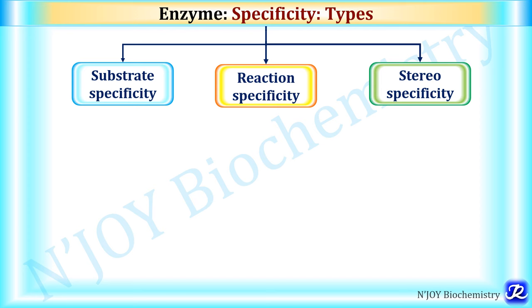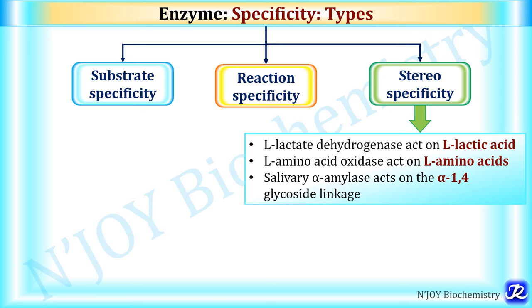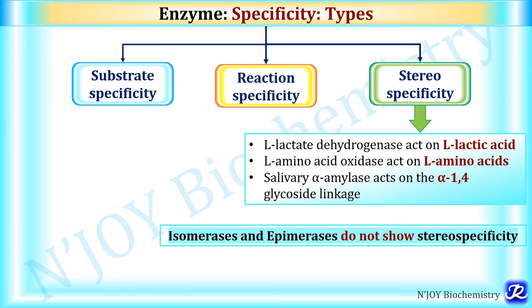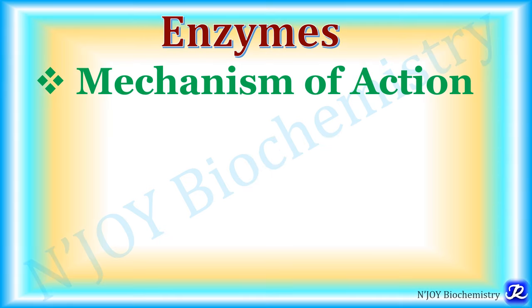The third type of enzyme specificity is stereospecificity, where a particular enzyme acts on stereoisomers only. For example, L-lactate dehydrogenase acts only on L-lactic acid, L-amino acid oxidase acts only on L-amino acids, and salivary alpha-amylase acts only on alpha-1,4 glycosidic linkages. Isomerases and epimerases do not show stereospecificity.